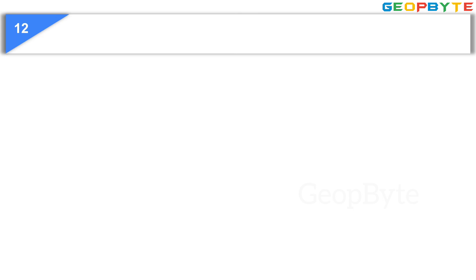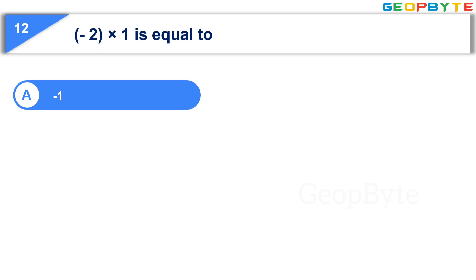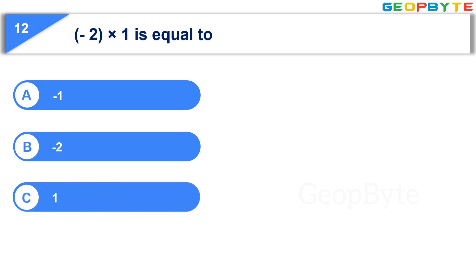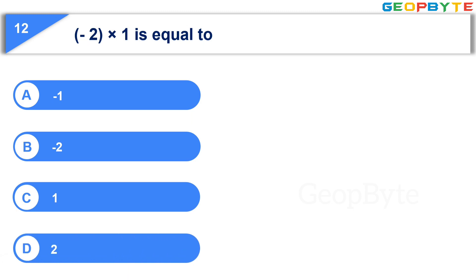Now let us see the next question: minus 2 into 1 is equal to — Option A: minus 1, Option B: minus 2, Option C: 1, Option D: 2. Your time starts now.